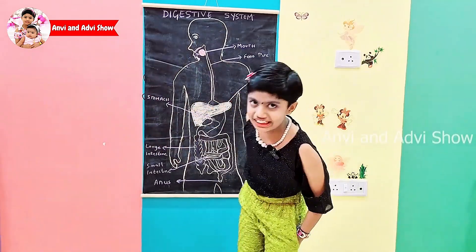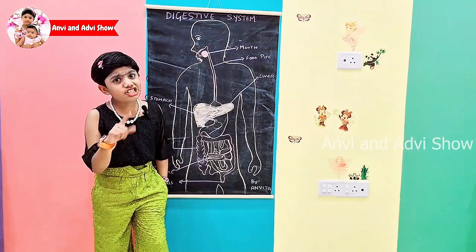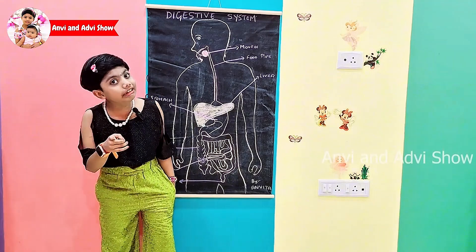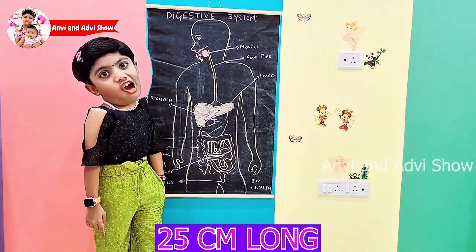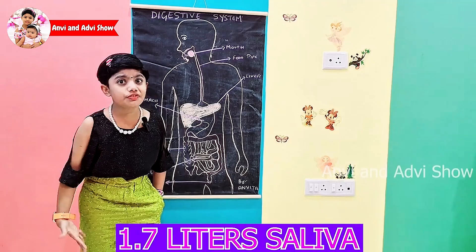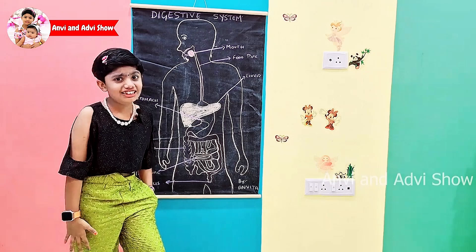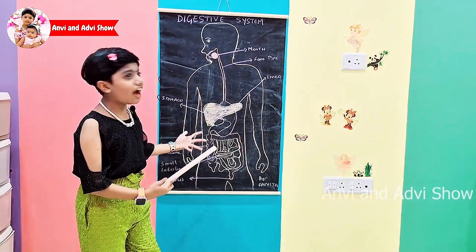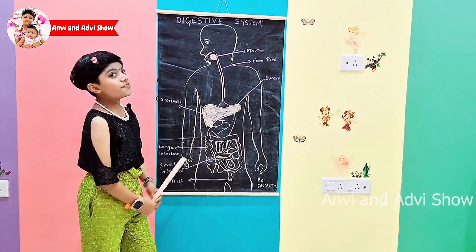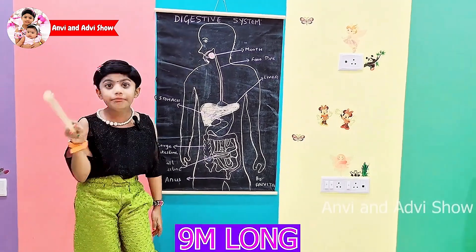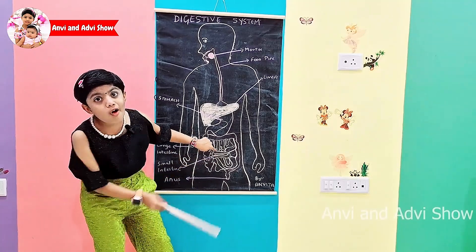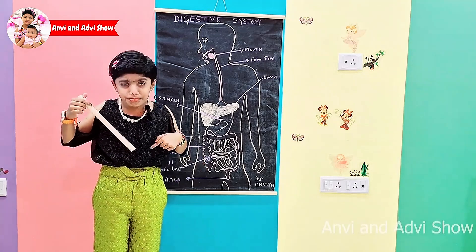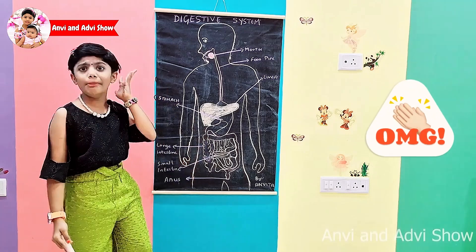Now let's hear some fun facts about our digestive system! Did you know each person eats about 500 kg of food each year? The food pipe is about 25 centimeters long. A body makes about 1.7 liters of saliva daily. Can you believe that? An adult stomach can hold about 1.5 liters of liquid. Our whole digestive system is about 9 meters long, and our small intestine alone is about 6 meters long! That's a 6-meter tube inside our body, coiled up, doing all that digestion for us!